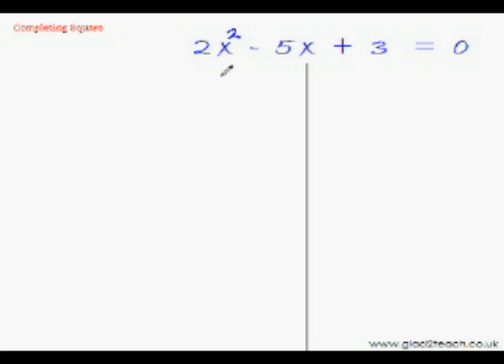So 2x squared divided by 2 will cancel this 2 and we will be left with just x squared. And minus 5x divided by 2 will be minus 5 by 2 x. And similarly this will be plus 3 over 2 equal to 0 as 0 divided by 2 will still be 0.